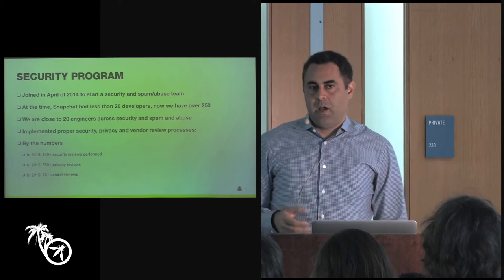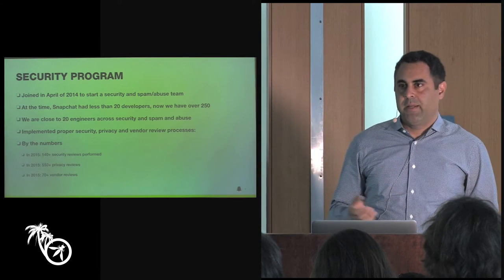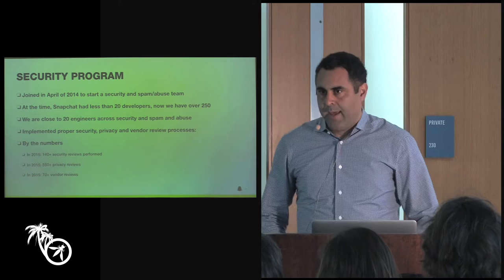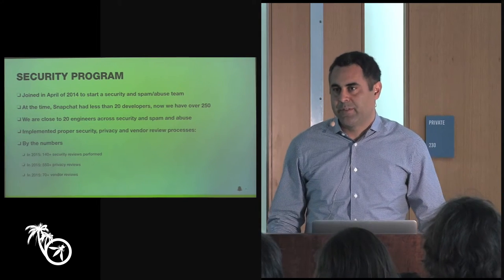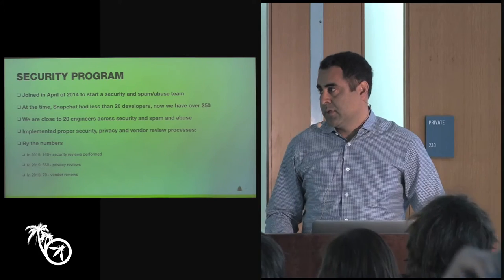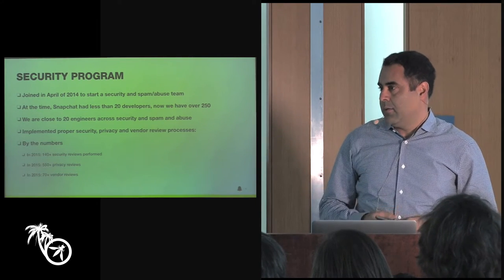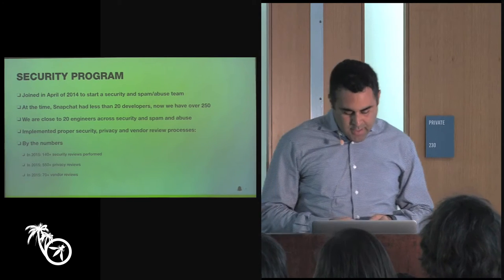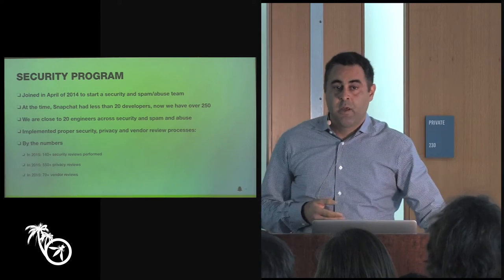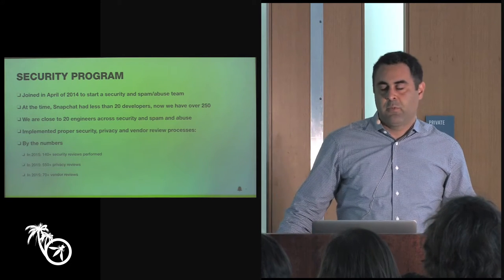We've implemented a lot of security, privacy, and vendor review processes — privacy by design, security by design, and due diligence whenever we work with a new vendor. In 2015, we conducted more than 140 security reviews, including design reviews, pen testing, application source code audits, and fuzzing. We also did more than 550 privacy reviews — any time there is new functionality at Snapchat, we do a privacy-by-design review first.